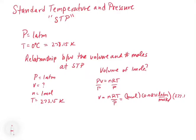Our temperature is 273.15 Kelvin and our pressure is one atmosphere. If you calculate the volume, you're going to get a volume of 22.4.